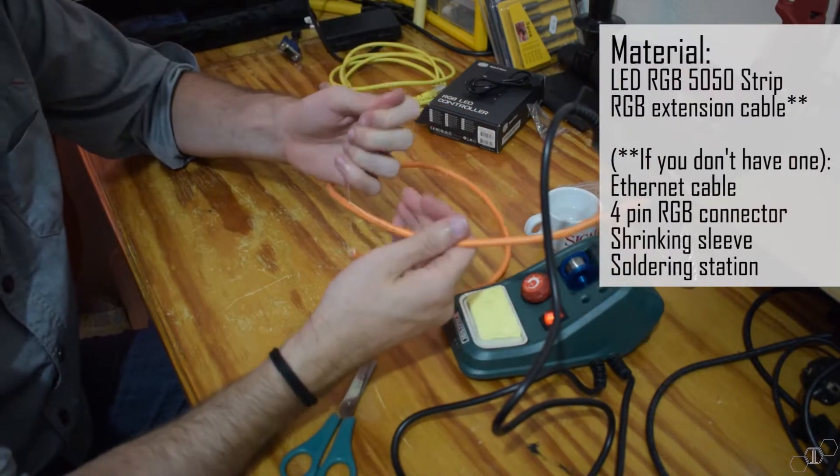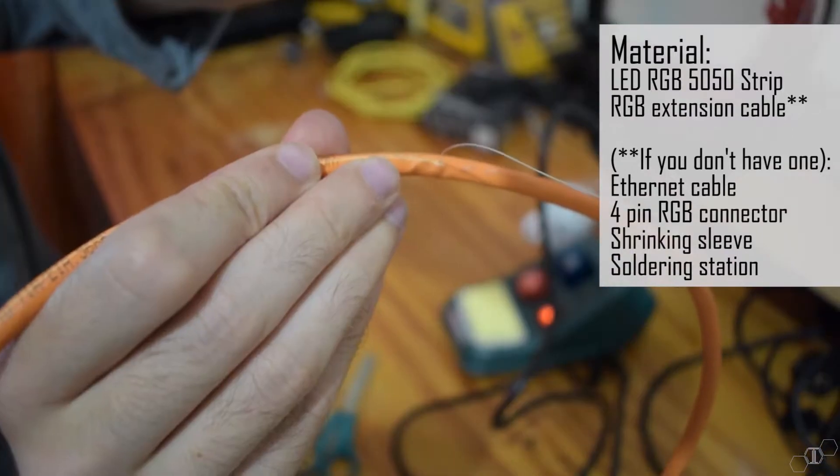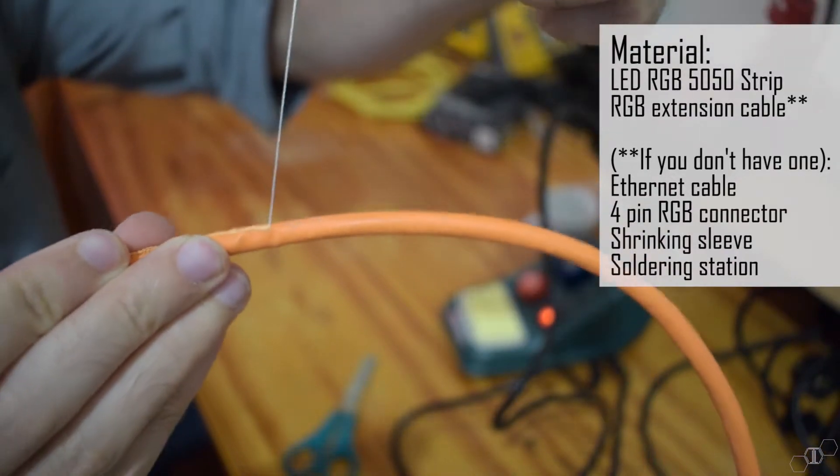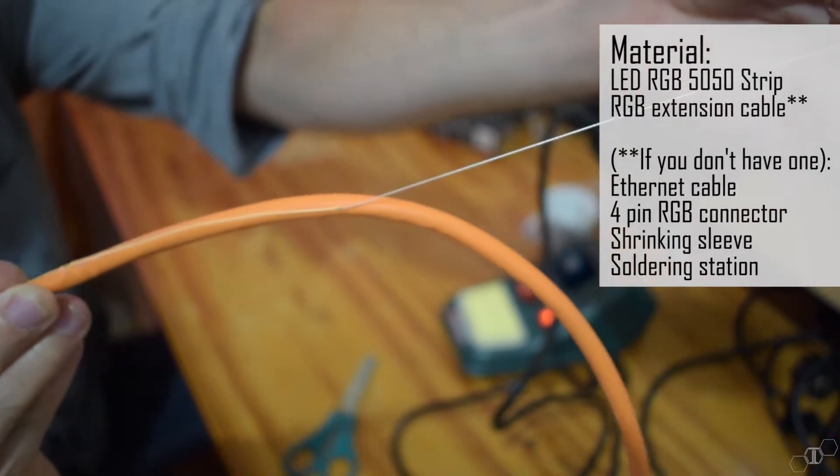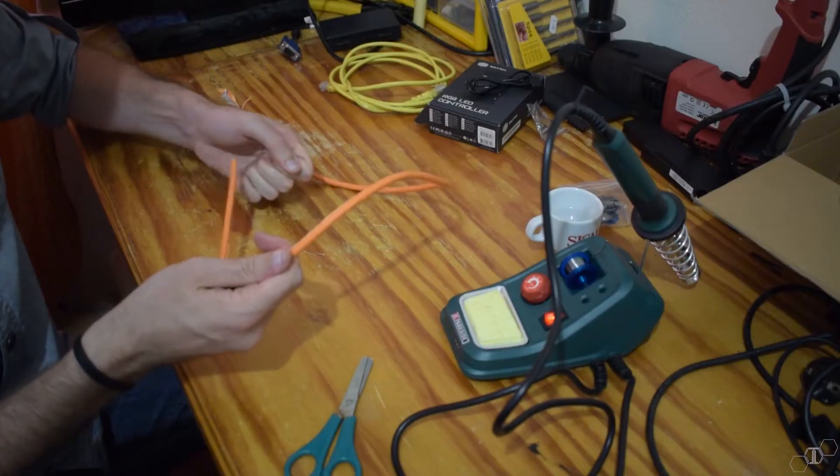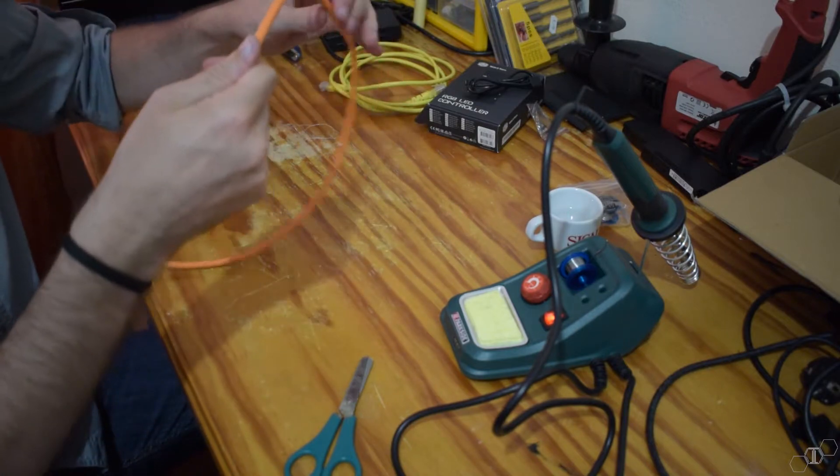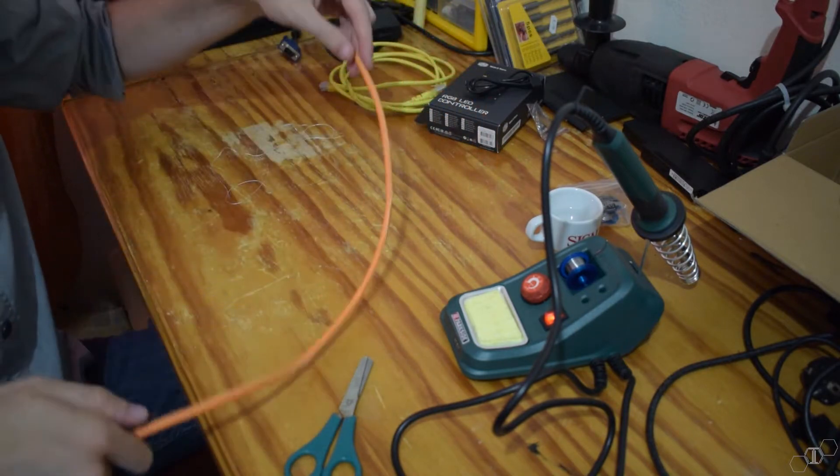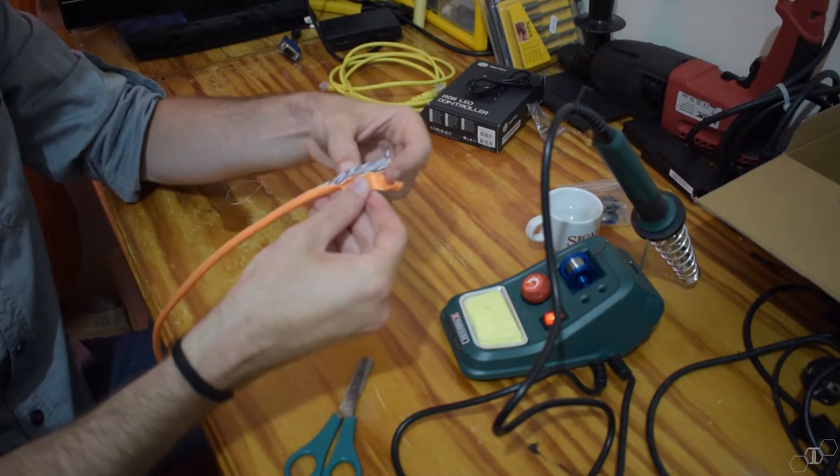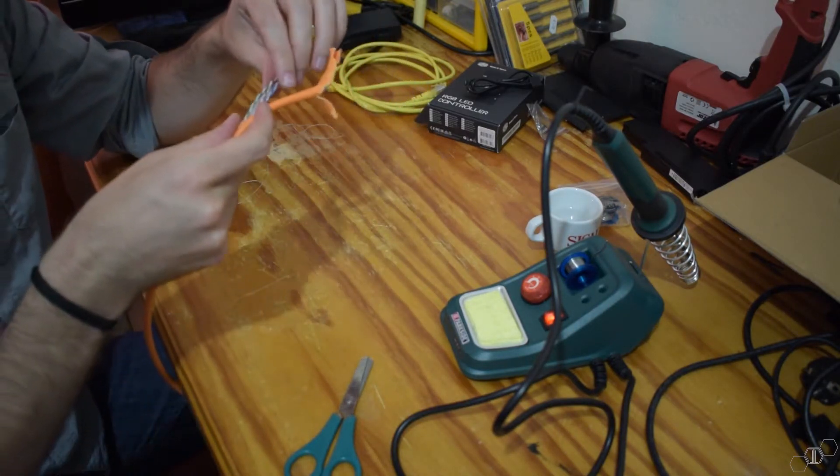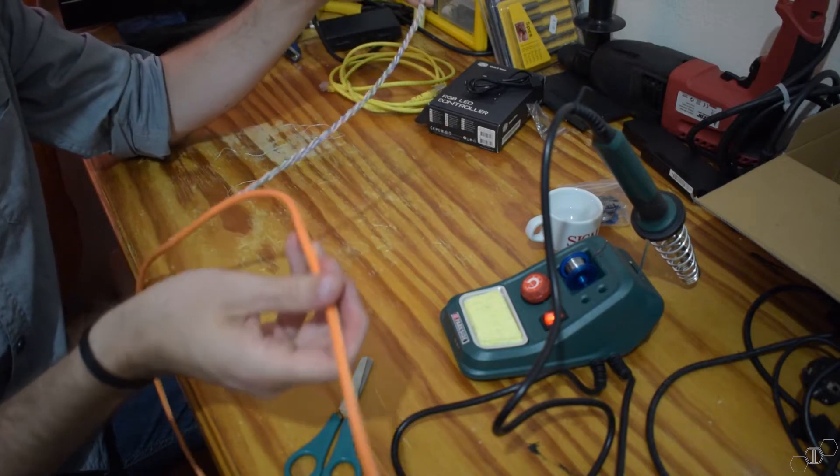After we grab all of the required material and equipment, we will start by opening an Ethernet cable to use the cabling inside. That's easy. We have to define which cables will carry what. Since some cables are already painted with some of the colors needed, the blue wire will be used for the blue connector for simplicity's sake. Make sure you keep track of the pinout and don't solder the 12 volt cable to the wrong pin.